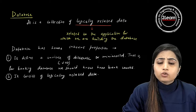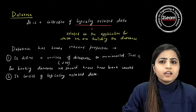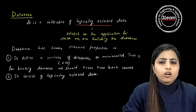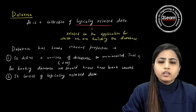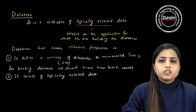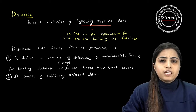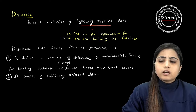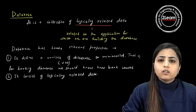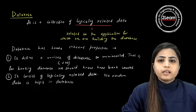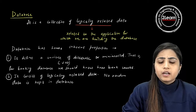No random assortment of data is kept in the database. For example, in a banking database, an employee's hobby is irrelevant to the banking application, so we do not keep such information. The database consists of only logically related data. It does not contain any random data. Only the necessary amount of data needed for the application is kept — no unnecessary data should inflate the database size.